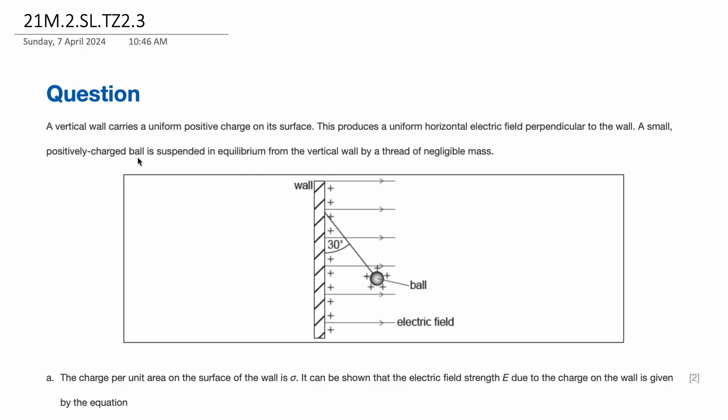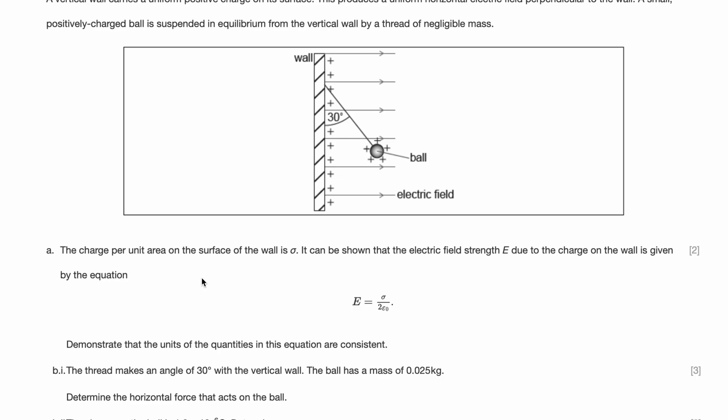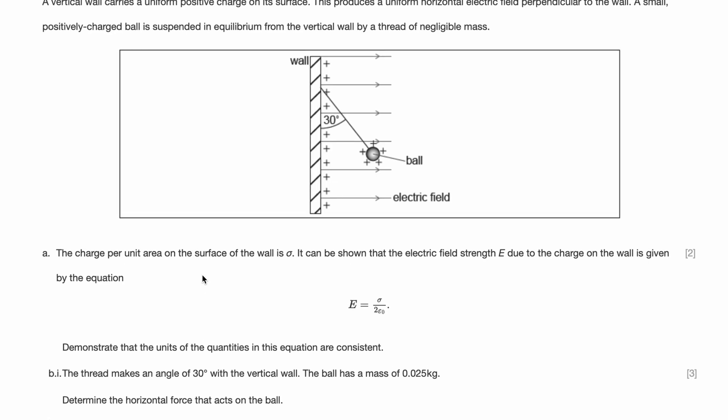A small positively charged ball is suspended in equilibrium from the vertical wall by a thread of negligible mass. So part A, the charge per unit area on the surface of the wall is sigma. It can be shown that the electric field strength E due to the charge in the wall is given by the equation. So this is some equation that we need to use somewhere. Let's just keep it safe.